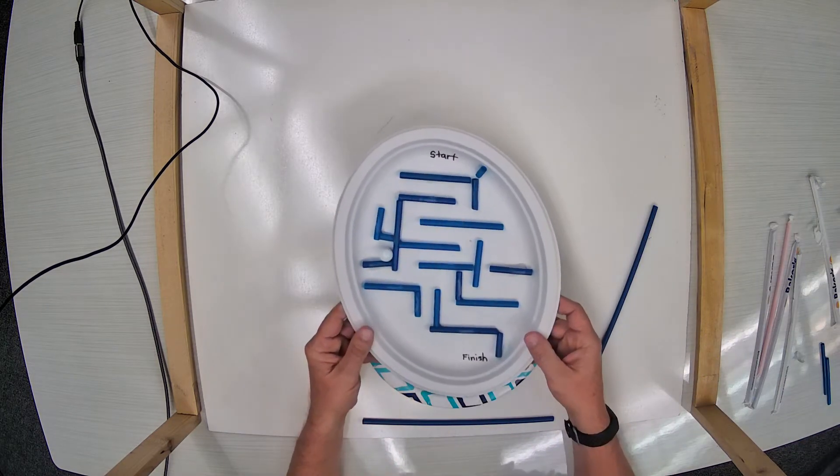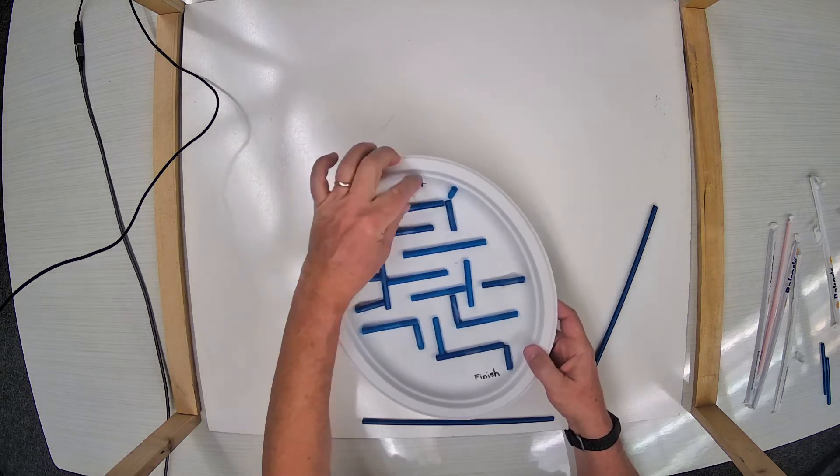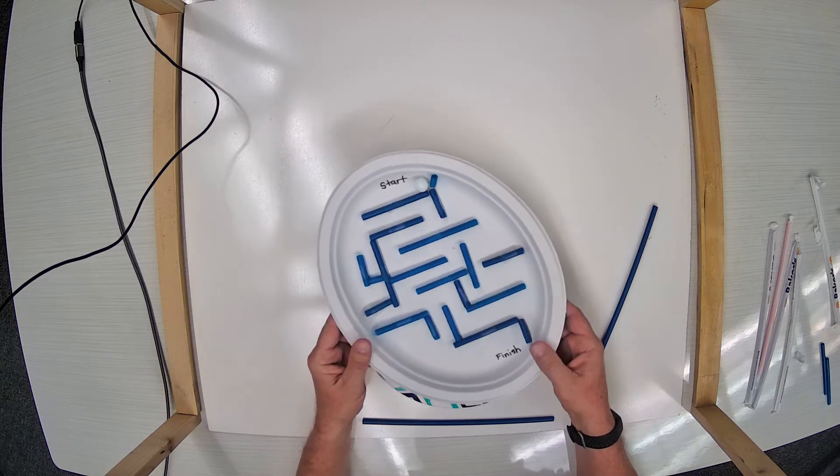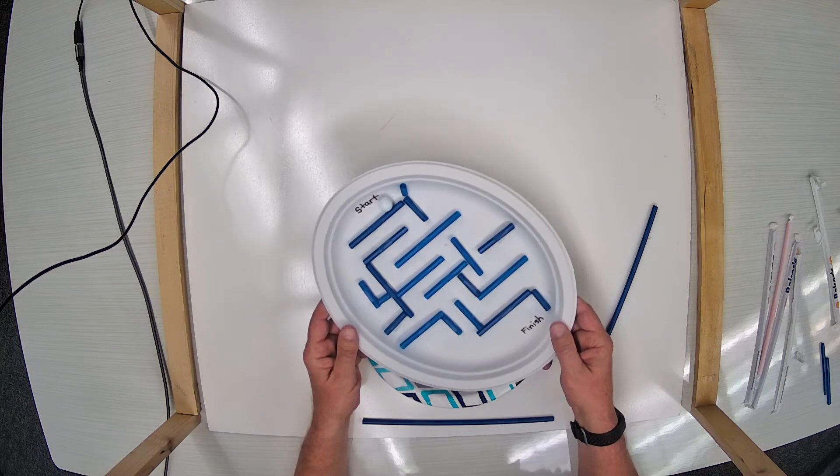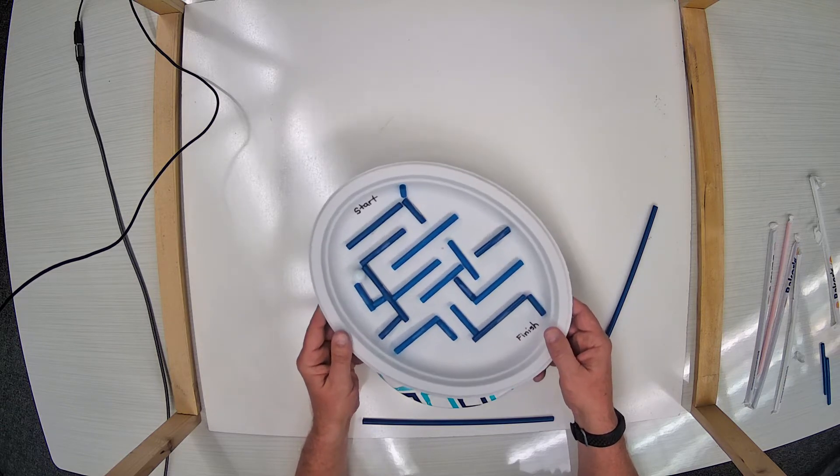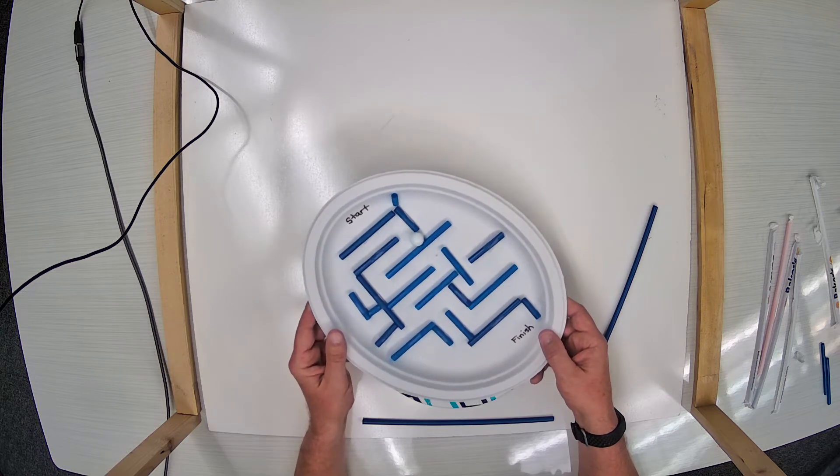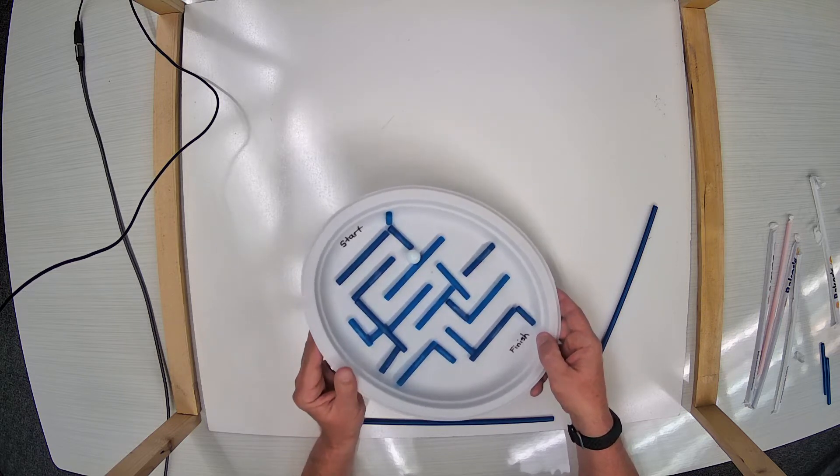And so, this is what it looks like when it's done. You're going to put a small ball in there, like a marble or some plastic ball, and then you're going to roll it through the maze that you've created to try to go from the start to the finish. Something like this.